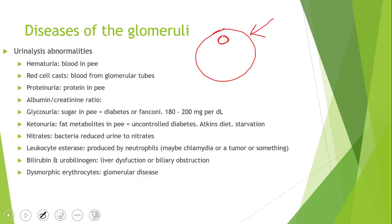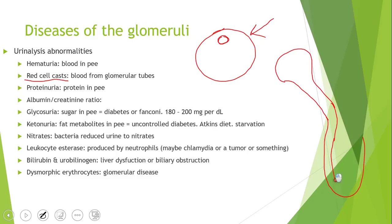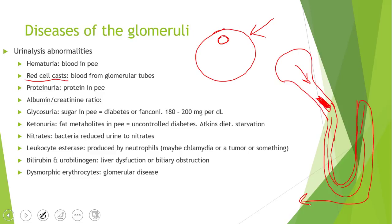An extremely important finding is red cell casts. Inside your kidney's tubules and loops, some red blood cells can get stuck in there for a while, then get washed through and come out in your urine with this casted appearance. That blood is from the glomerular tubes and is very indicative of glomerular disease.